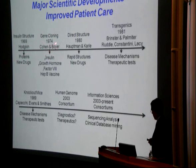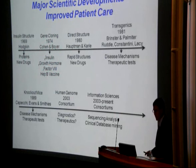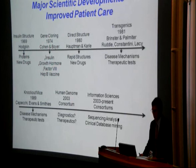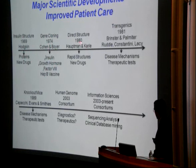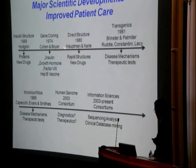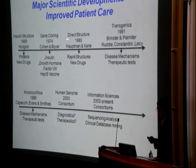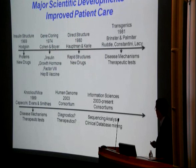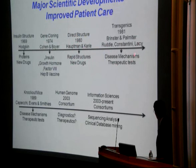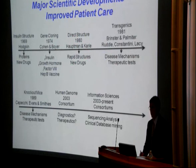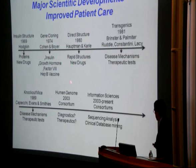Gene cloning by Boyer and Cohen resulted in recombinant proteins — insulin, growth factor, factor VIII, and the hepatitis B vaccine now preventing hepatoma and chronic hepatitis B throughout the world. Direct structure determination by crystallography allowed what took Hodgkins 35 years to be done in weeks by a relative amateur. Transgenics and mouse knockout models now allow us to study genes and mechanisms of disease and test new drugs in animal models.